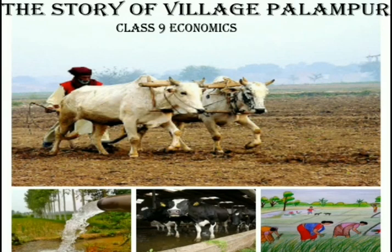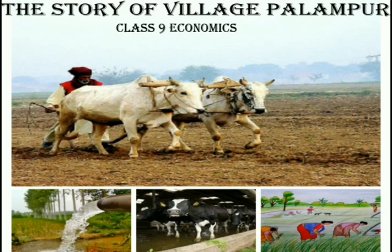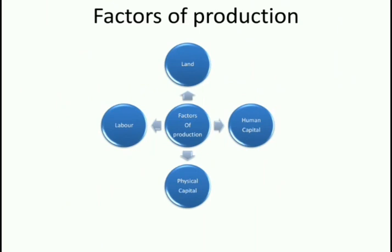Hello everybody. Today we will discuss more about the chapter 'Story of Village Palampo'. In the previous video, we discussed the various activities, various facilities, families and the main factors of production. We had a brief introduction about the various factors of production in the last video. These were land, labour, physical capital and human capital.